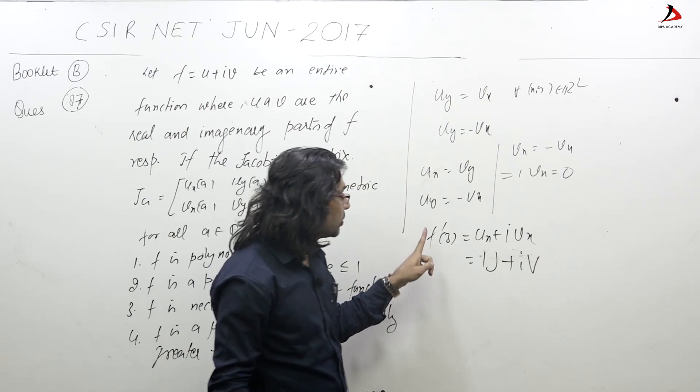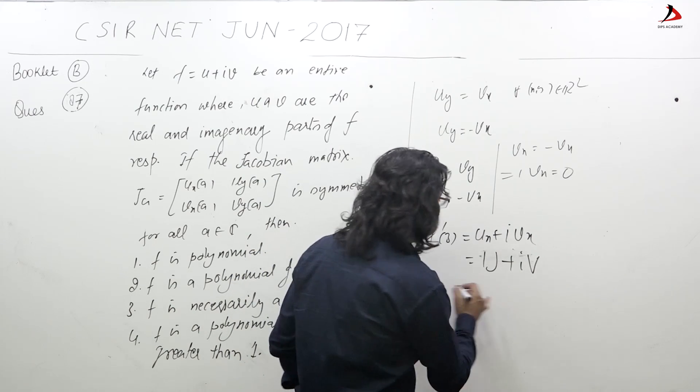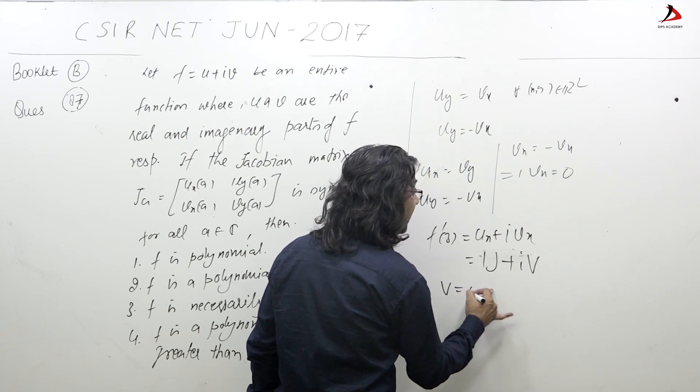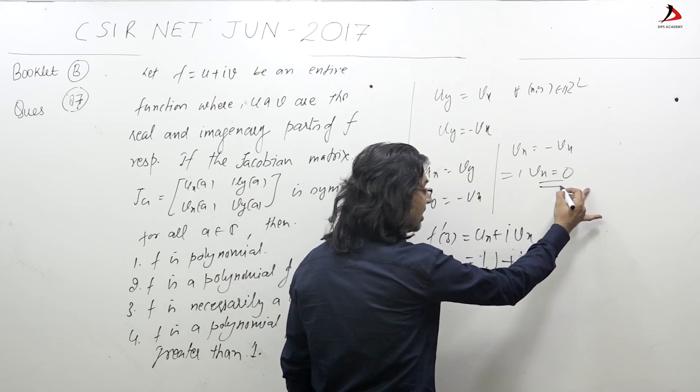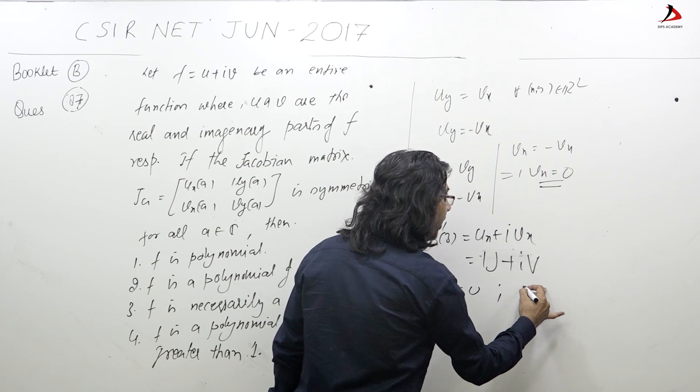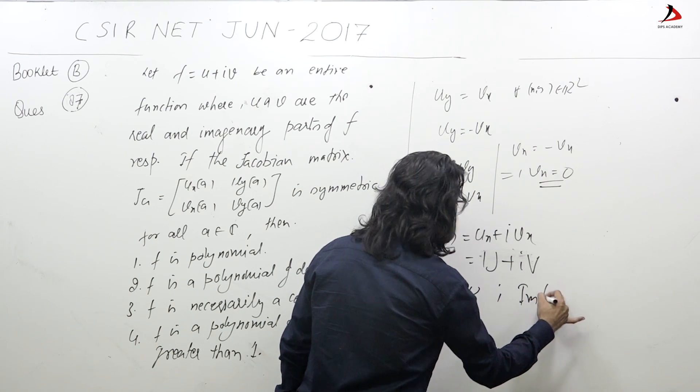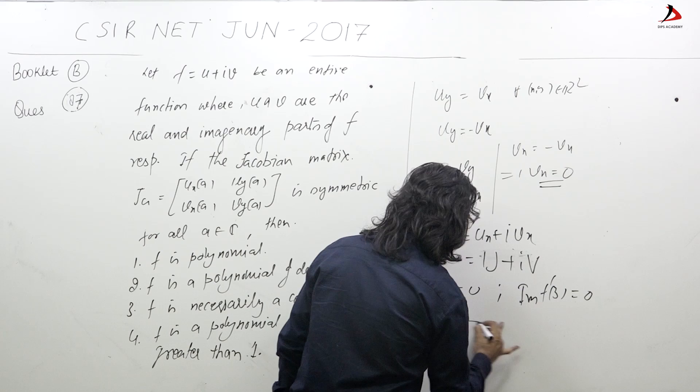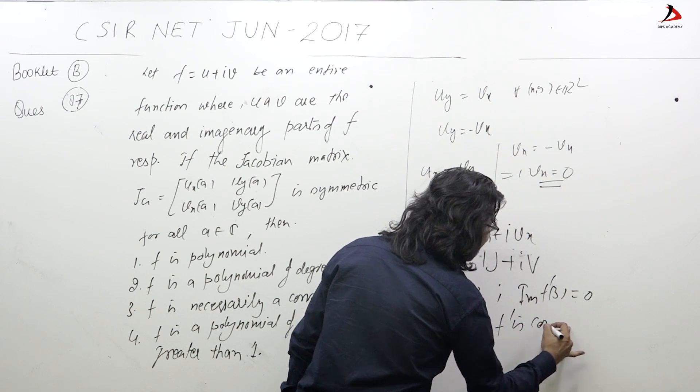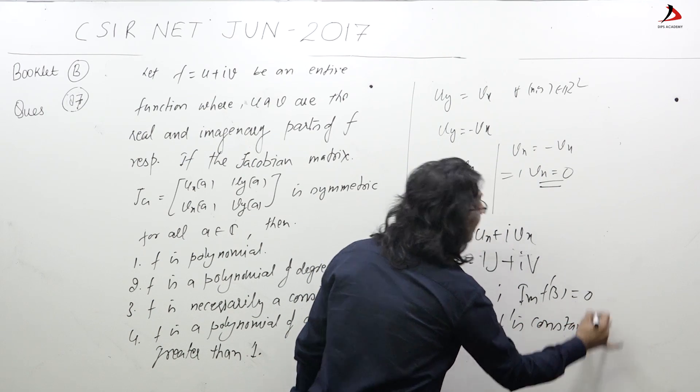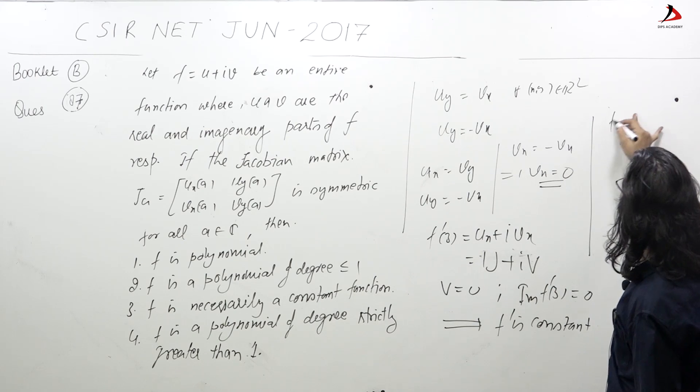Now the derivative of entire function is further entire, so this f' is analytic. But v_x is 0 by this result, so imaginary part of f'(z) is 0. This implies f' is constant, and this gives you the result that f(z) is of the form a + bz.